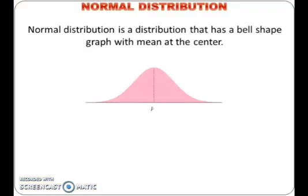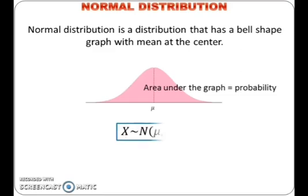Normal distribution is a distribution that has a bell-shaped graph with mean at the center. The area under the graph gives the probability. The two important parameters in normal distribution are mean and variance.